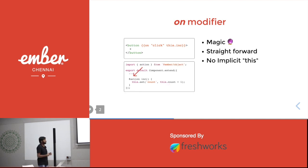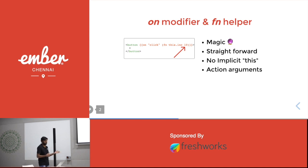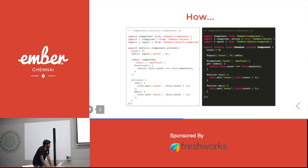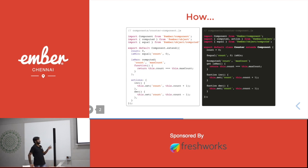If you need to pass any argument to a function via template code, we need to use the 'fn' helper, which was also introduced recently. As a first step, we are going to convert our counter class into native JS syntax. Then we have to rewrite our computed properties as well as actions using decorators. Here, computed properties are defined as getters in ES classes. You can see that the import statements are not changed at all because the framework modules are compatible both with classic as well as the decorator syntax.